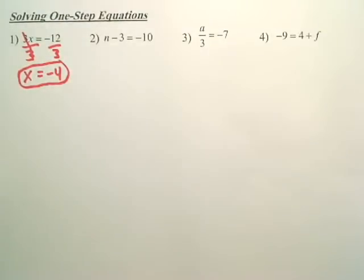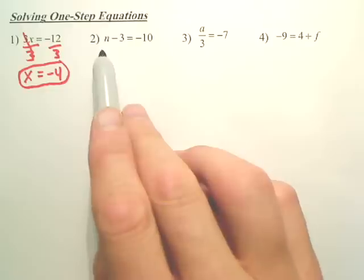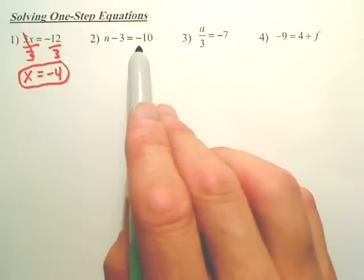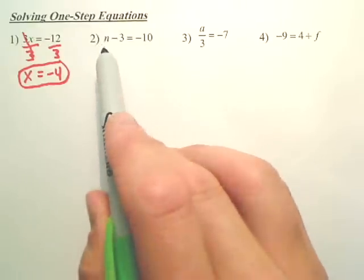Now, the next one. Most of you could look at this and go, what minus 3 would give me negative 10? Hopefully you could tell that's negative 7. But here's the procedure to actually find it. I want to find out what n is.